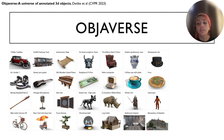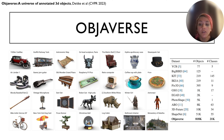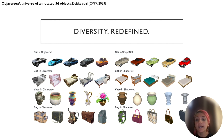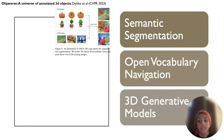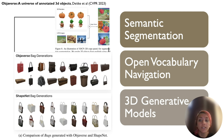We have collected 800,000 3D models from 21,000 categories along with their corresponding text from online resources. Since the data is sourced from a large-scale online platform, the diversity of the data collected is significantly greater than that of previous datasets. We showed that the diversity and scale of this dataset improves a variety of different applications such as semantic segmentation, open vocabulary navigation in embodied AI, and 3D generation.